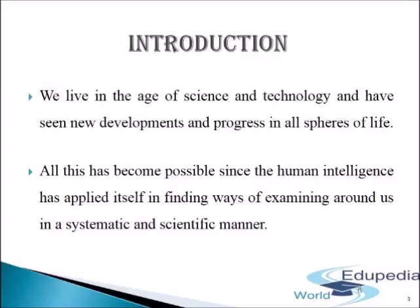All this has become possible since human intelligence has applied itself in finding ways of examining phenomena — natural, social, economic — around us in a systematic and scientific manner. A methodology has been developed for objective empirical study of things. The empirical methodology consists of making observations, collecting information, analyzing the information, drawing conclusions, and retesting these conclusions by further observation, and thus laws are made.